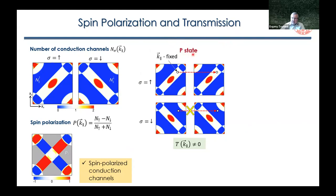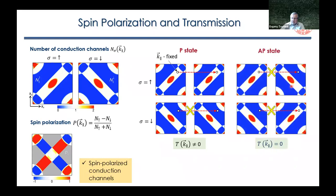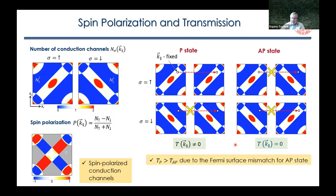For example, if we have parallel alignment of the two electrodes with the same Néel vector orientation and fix a particular K-parallel point, then for spin-up we have one conduction channel in both left and right electrodes, but for spin-down there is no available state and conduction is forbidden. If we go to the antiparallel state, we flip the spin designation in the right electrode — while the left electrode has an available state, there is no state in the right electrode for either spin channel, so transmission equals zero. This simply explains why we should have higher transmission for the parallel case compared to antiparallel, driven by Fermi surface mismatch in the antiparallel state.